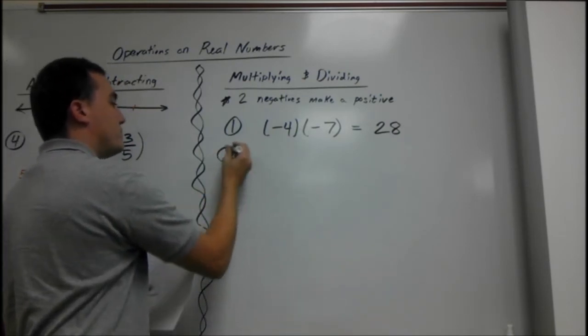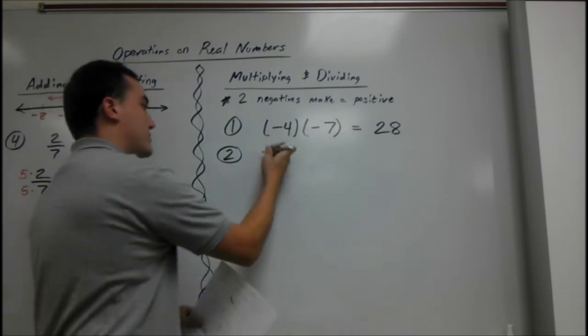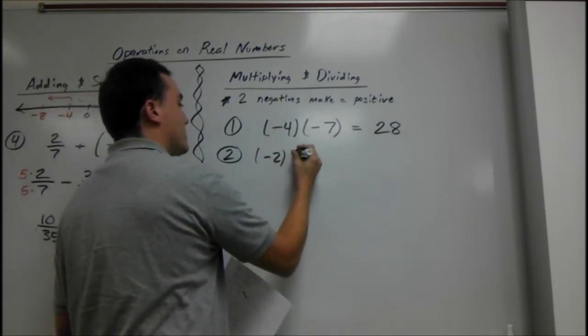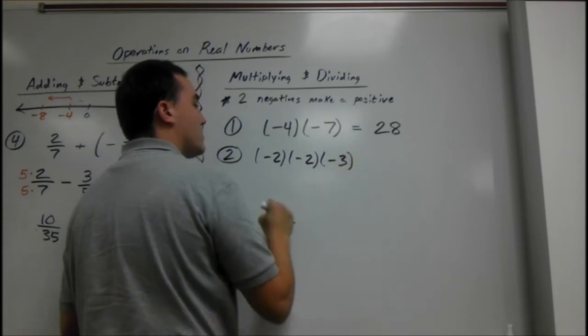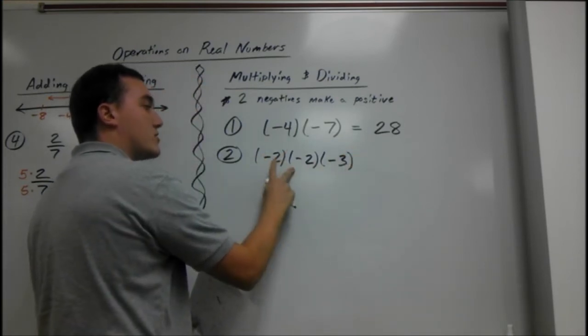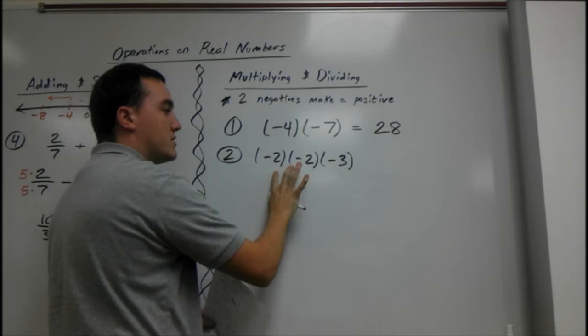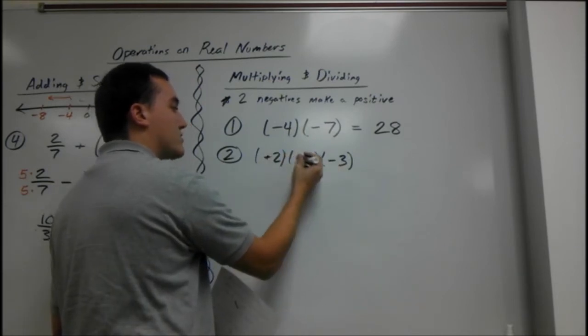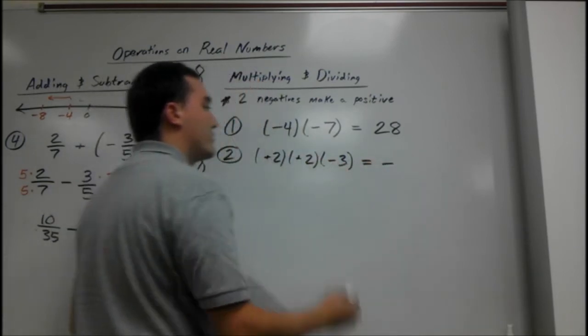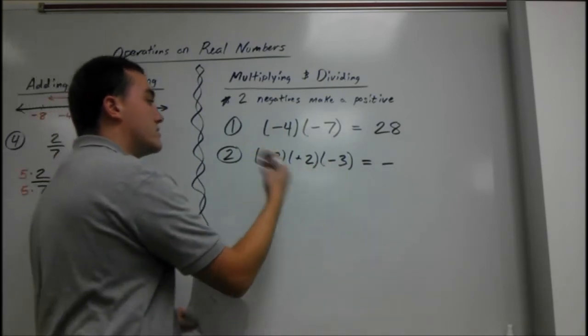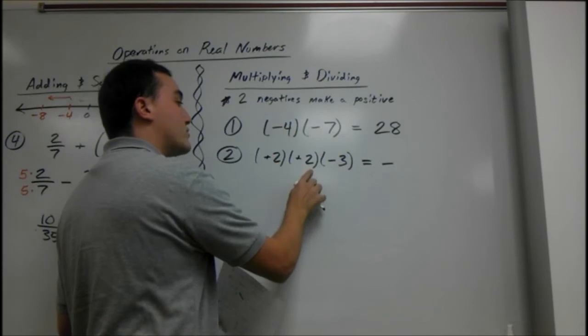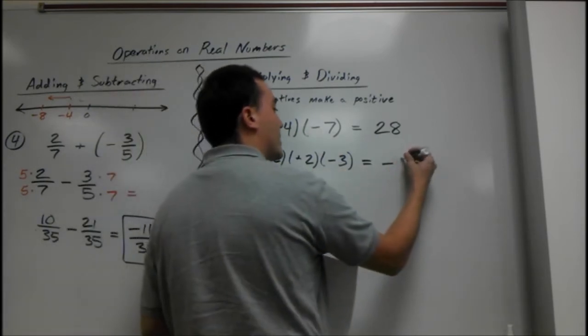Two. We have negative two times negative two times negative three. We have two negatives here, so those are going to cancel out. But since we have three negatives, only two cancel out, one stays. So our answer is going to be negative. If you have an odd amount of negatives, it's going to be negative. If you have an even amount, it's going to be positive. Two times two is four, times three is twelve, so we get negative twelve.